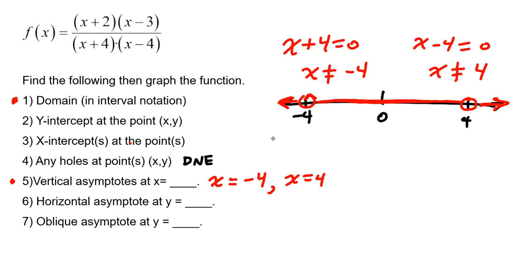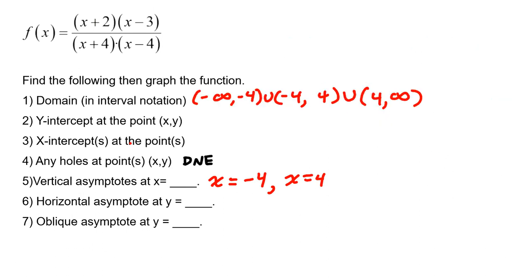And so writing that in interval notation, that will be from negative infinity to negative 4, union negative 4 to positive 4, union 4 to positive infinity. So now we have finished part 1 and part 5, and we also did part 4 so far.